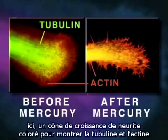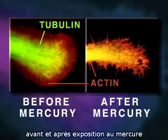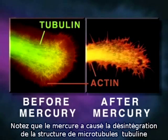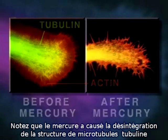Shown here is a neurite growth cone stained specifically for tubulin and actin, before and after mercury exposure. Note that the mercury has caused disintegration of tubulin microtubule structure.